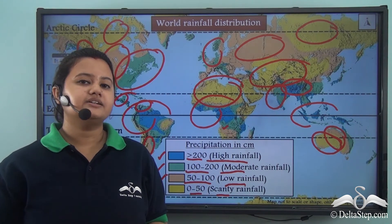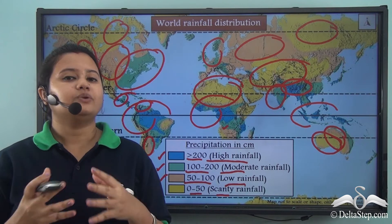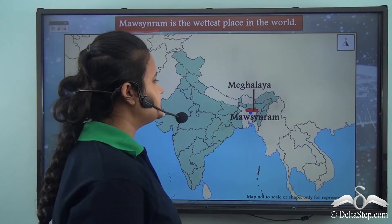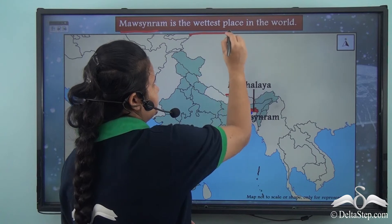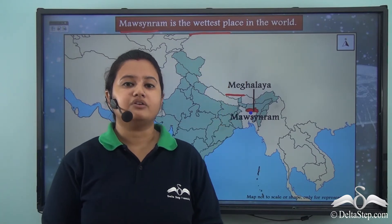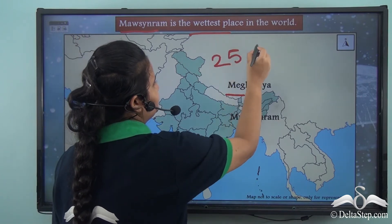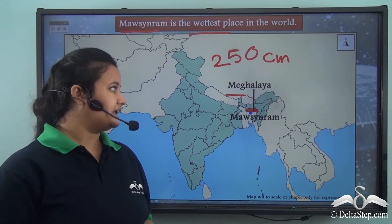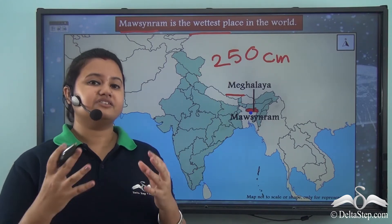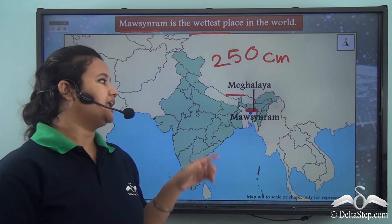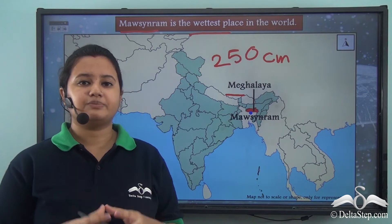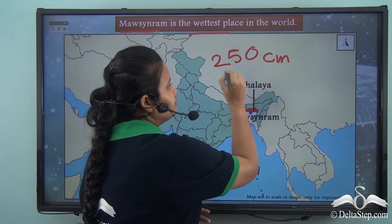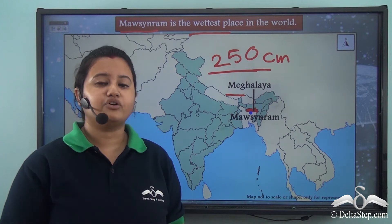Can you name the wettest place in the world? Mawsynram, situated in Meghalaya, is the wettest place in the world. It receives an annual rainfall of 250 cm on average. On the previous world map, we saw that the northeastern part of India is the region that receives high rainfall, and Mawsynram in that region is the wettest place in the world.